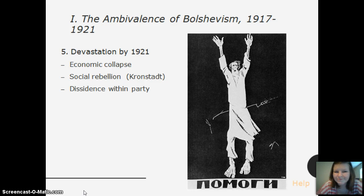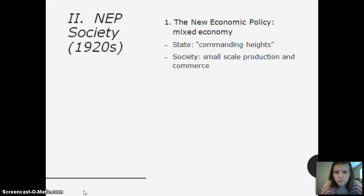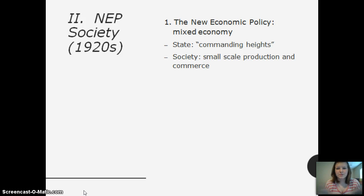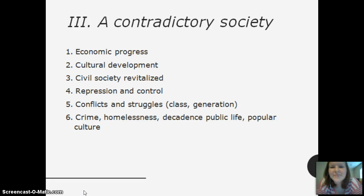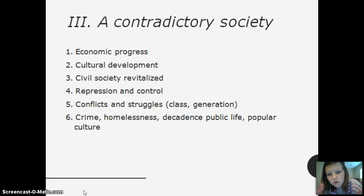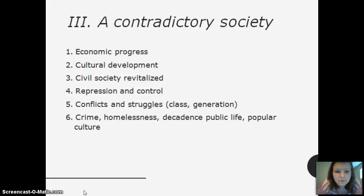The Russian Revolution had a lot going on. There was the New Economic Policy in the 1920s — small-scale production and commerce within society. There was economic progress, cultural development, civil society, revitalized repression and control, conflicts and struggles between classes and generations, and then crime, homelessness, decadence, public life, and popular culture. Most of these things contradict each other — it was a contradictory society.